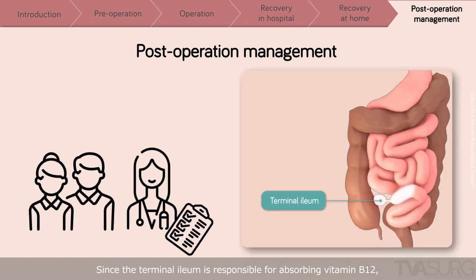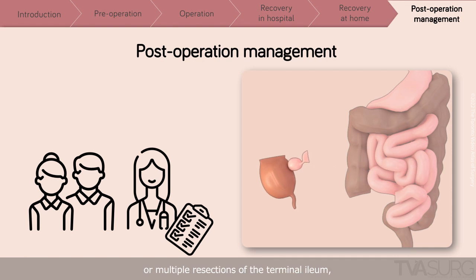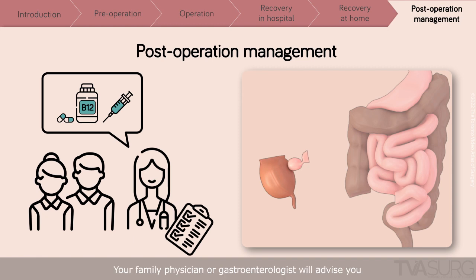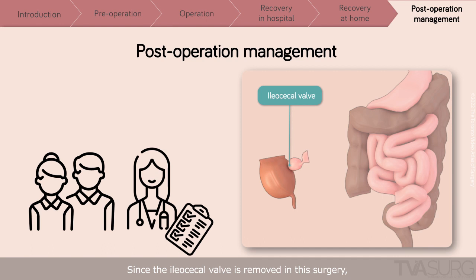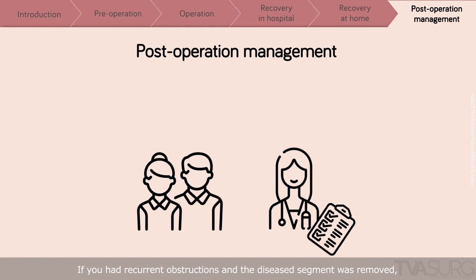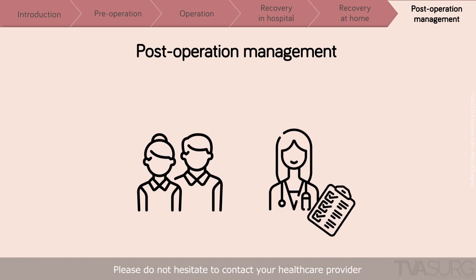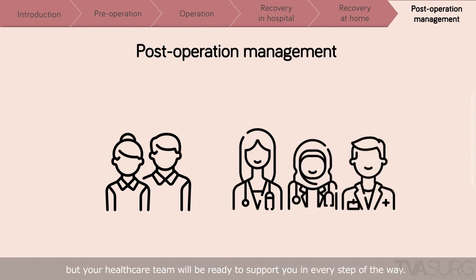Since the terminal ileum is responsible for absorbing vitamin B12, if you had a long segment removed or multiple resections of the terminal ileum, you may require vitamin B12 replacement. Your family physician or gastroenterologist will advise you based on your blood tests. Since the ileocecal valve is removed in the surgery, you may have more frequent bowel movements than before — this is normal and your gastroenterologist can advise on management. If you had recurrent obstructions and the disease segment was removed, you should be able to resume and liberate your diet under the guidance of your dietitian and gastroenterologist. Please do not hesitate to contact your healthcare provider if you have any additional questions. Crohn's disease is a lifelong condition, but your healthcare team will be ready to support you every step of the way.